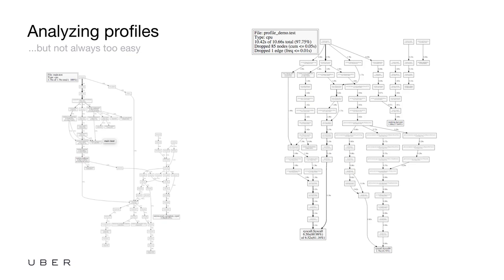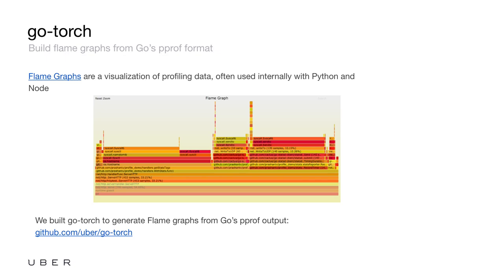That's actually why we at Uber built a tool called GoTorch. GoTorch is a program that generates flame graphs, which are common in the Node and Python communities. It takes the same data that comes out of PPROF but renders the data differently. In a flame graph, the y-axis shows the stack depth. The top box shows the function that's actually running on your CPU, and everything beneath is a list of callers.